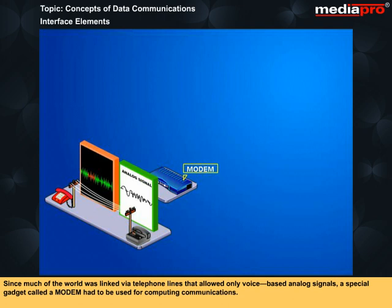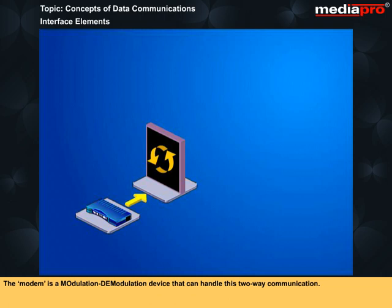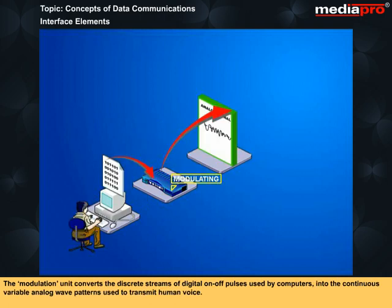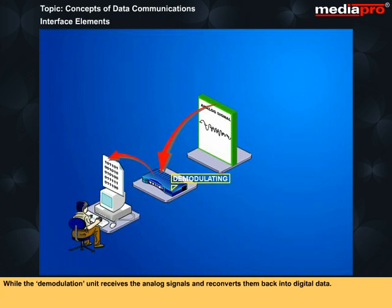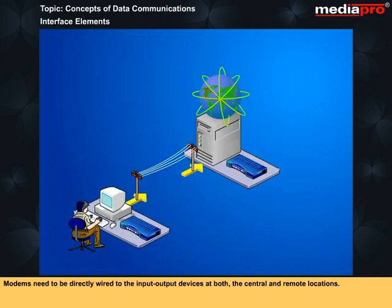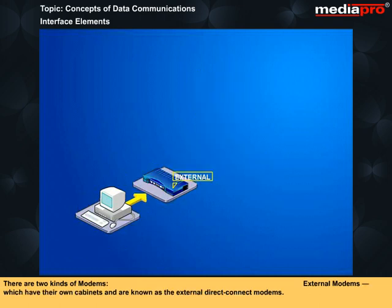Since much of the world was linked via telephone lines that allowed only voice-based analog signals, a special gadget called a modem had to be used for computing communications. The modem is a modulation-demodulation device that can handle two-way communication. The modulation unit converts the discrete streams of digital on-off pulses used by computers into the continuous variable analog wave patterns used to transmit human voice, while the demodulation unit receives the analog signals and reconverts them back into digital data. External modems have their own cabinets and are known as external direct connect modems.